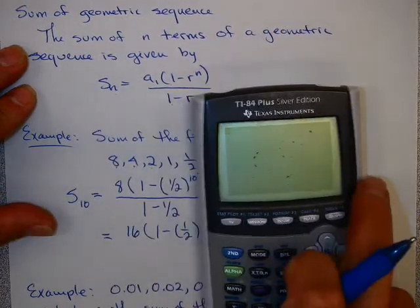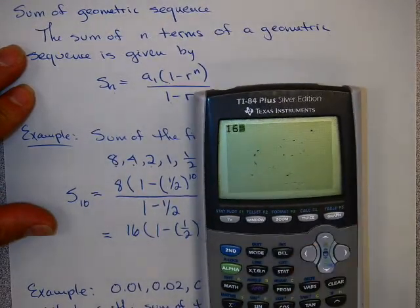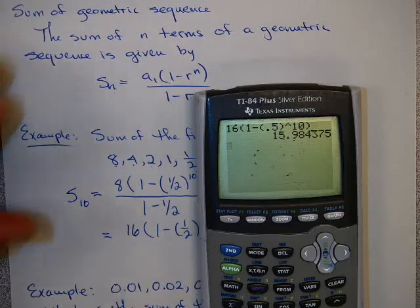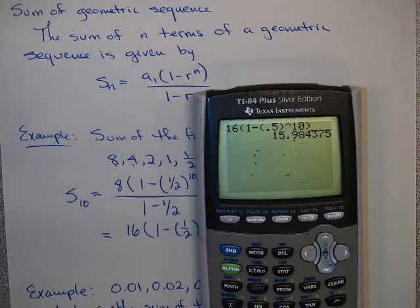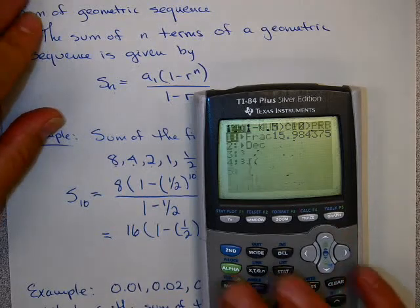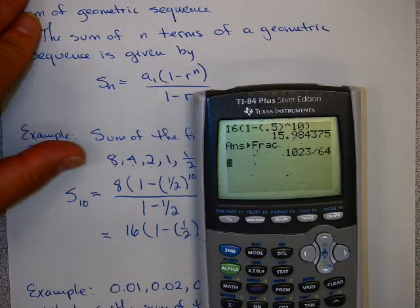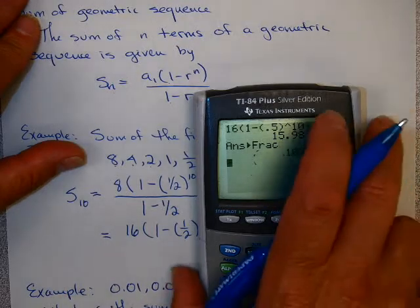Let me go to my calculator on this one. So I had 16 times the quantity 1 minus 1 half, I'll use 0.5, raised to the 10th. And that solution is 15.984375. If you want a fraction, you can do math fraction. Either of those answers can be acceptable.